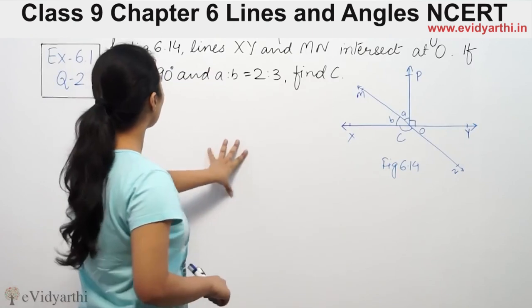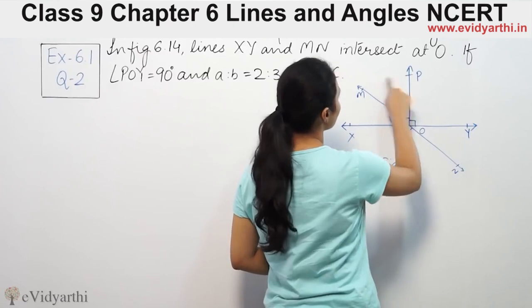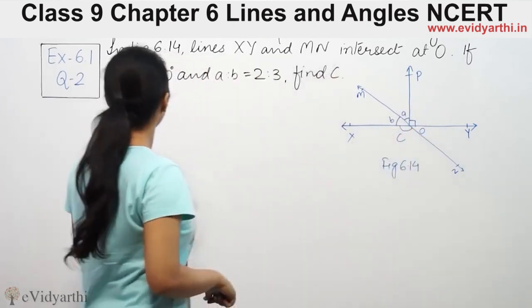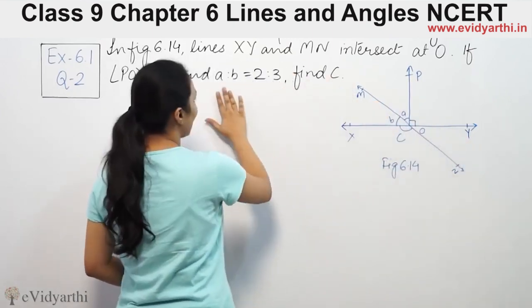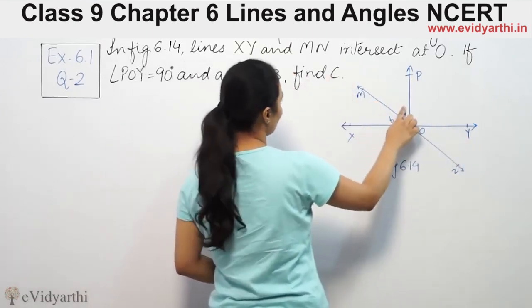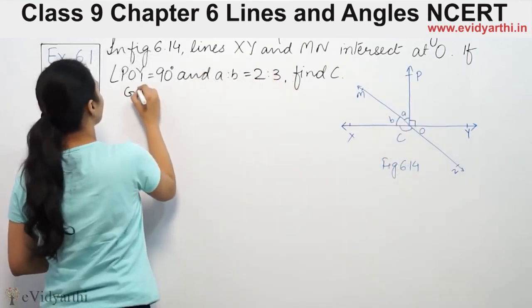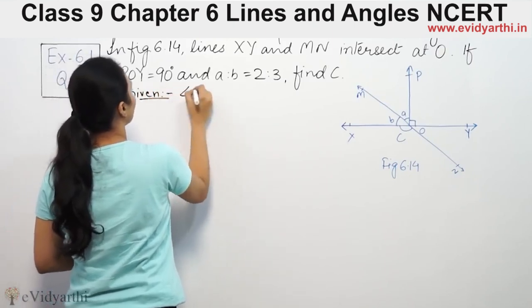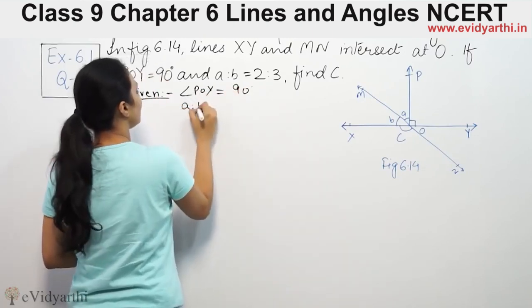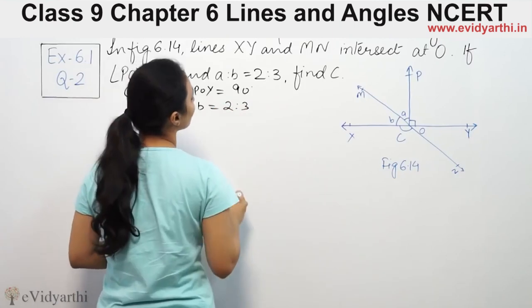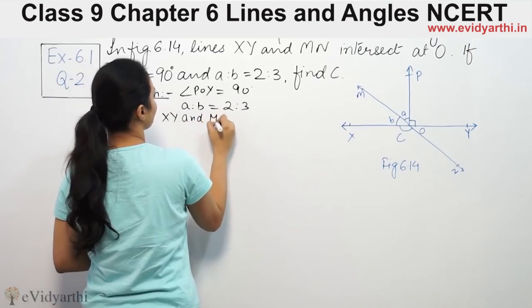The question says: lines XY and MN intersect at O. If angle POY is 90°, and the ratio of a to b is 2:3, then find angle C.